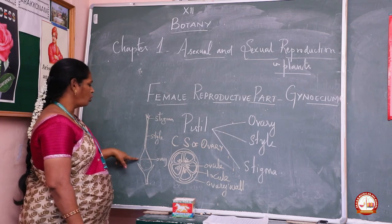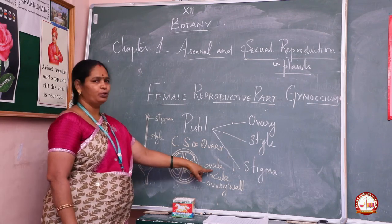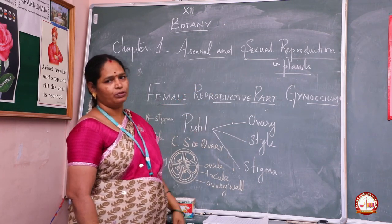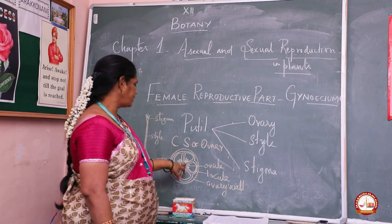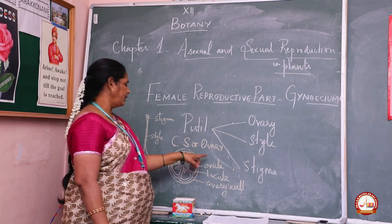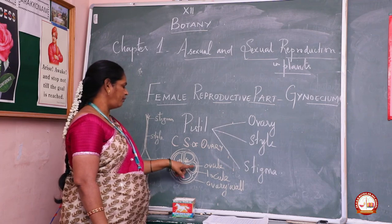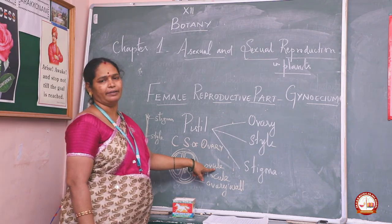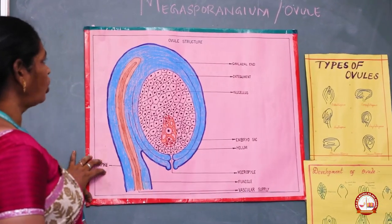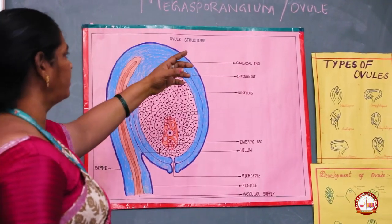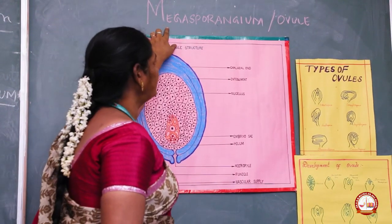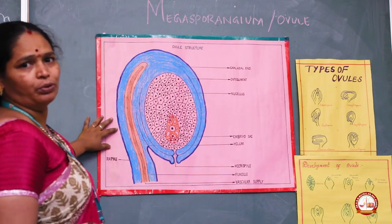When you cut this ovary, you can find the ovule inside. Our real topic is about the structure of the ovule. The cross-section of the ovary can have ovules inside. The ovule is also called the megaspore, and the megaspore would be present inside, which we can call the ovule.